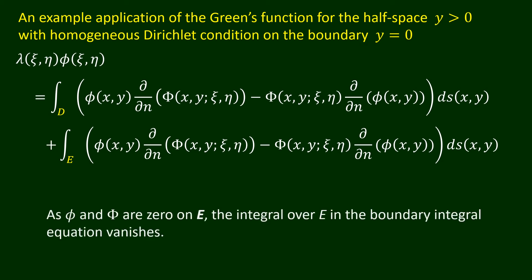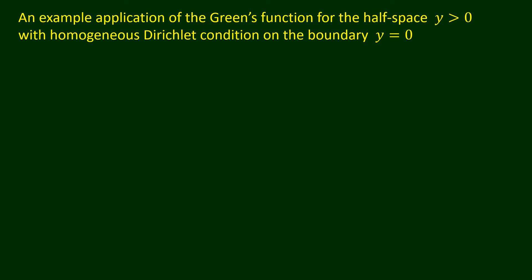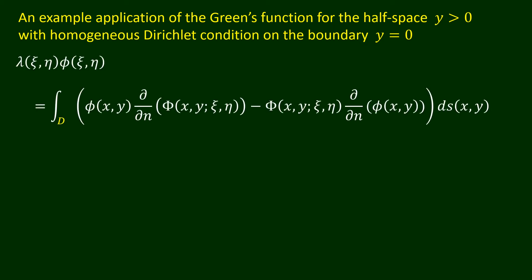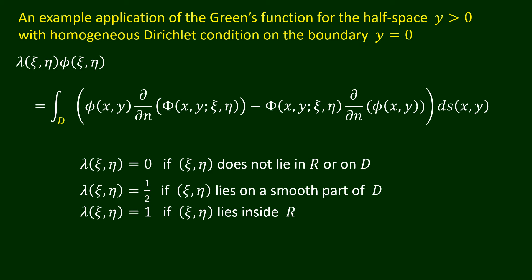Since phi and capital Phi are both 0 on E, the integral over E in the boundary integral equation vanishes. Hence, with the use of the special Green's function, the boundary integral solution requires integration over only the curve D. If we use this boundary integral solution to derive a boundary element procedure for the numerical solution of the boundary value problem, no discretization of the line E is needed. Only the curve D has to be discretized into straight line elements.